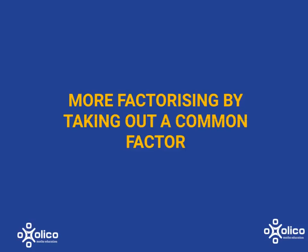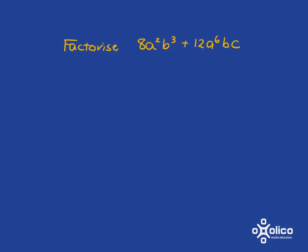We're going to look at some more complicated examples where we're factorising by taking out a common factor. If we're asked to factorise something like this, our first step is to find the highest common factor of these two terms.